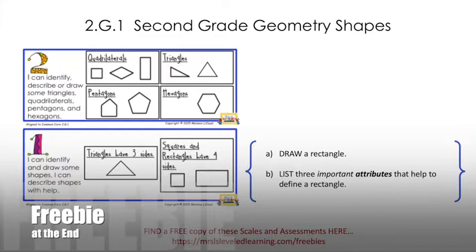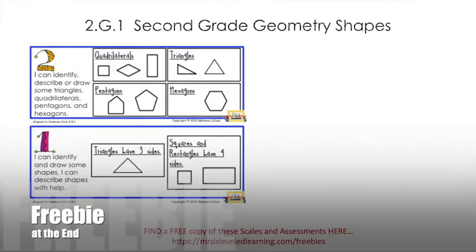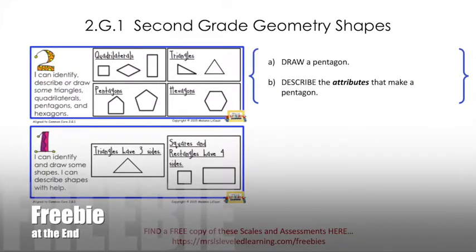This will be something you can look at when you go over their papers or when you go through the problem in class. At the second level of the scale, you want to look at several different categories of shapes and make sure students can identify, describe, or draw them. The four specific categories they need to know are quadrilaterals, triangles, pentagons, and hexagons. I would ask a question like: draw a pentagon and describe the attributes that make a pentagon.